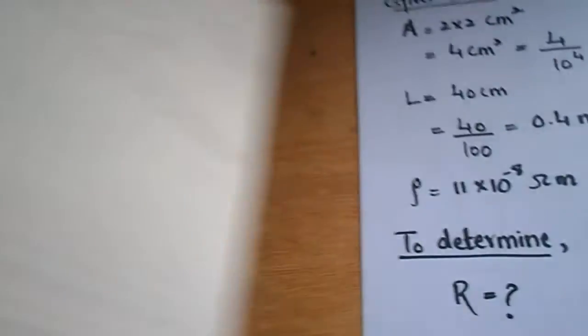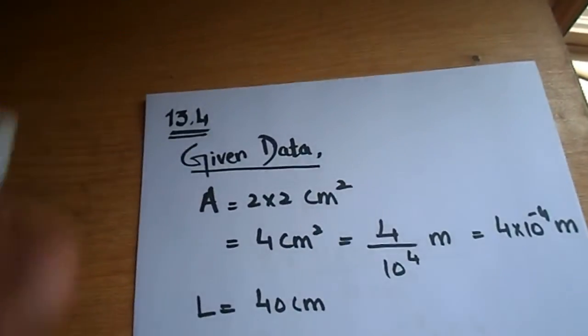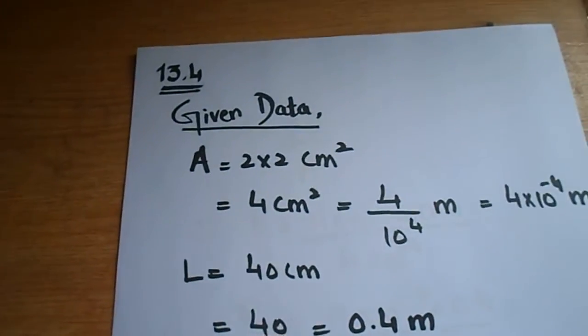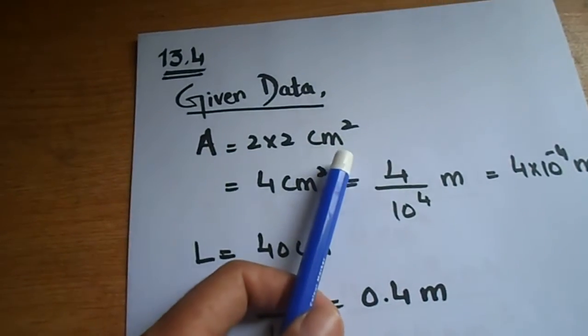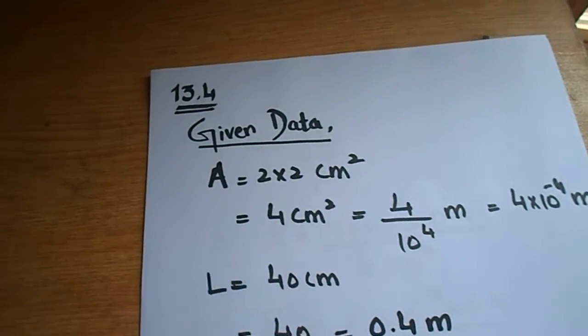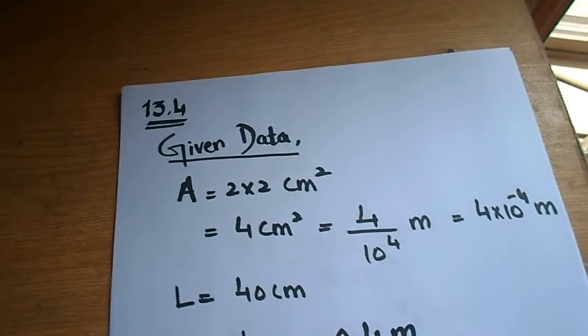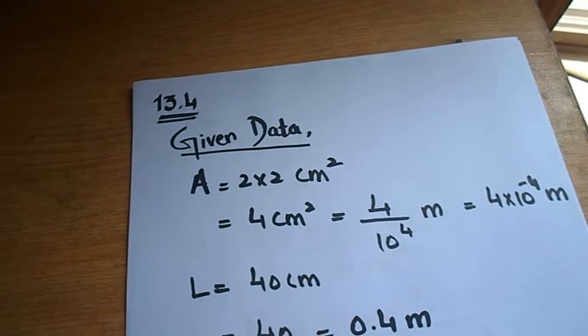We have a rectangular bar of iron with a cross-sectional area and length. They have said that 2 by 2 cm, we have the area, so definitely 2 by 2 cm square. First of all, we will convert cm square to m square because meter is an SI unit and cm is not an SI unit.